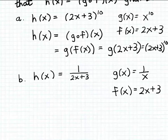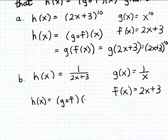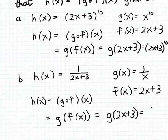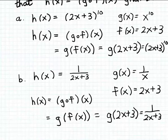Let's see what happens when we compose these two functions. G compose f of x equals g of f of x by definition. Since f of x is 2x plus 3, we have g of 2x plus 3. The function g takes the reciprocal of its input, so g of 2x plus 3 equals 1 over 2x plus 3. And that's exactly what we wanted — the formula for h. So if we let g of x be 1 over x and f of x be 2x plus 3, we can decompose h as the composition of these two simpler functions g and f.